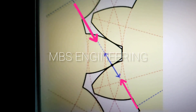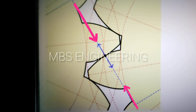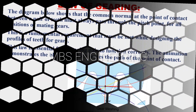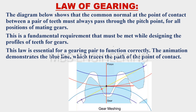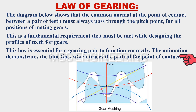Please refer to the law of gearing animation video. To achieve the law of gearing or constant angular velocity, a normal at the point of contact between mating gear teeth always passes through the pitch point. The diagram shows that the common normal at the point of contact between a pair of teeth must always pass through the pitch point for all positions of mating gears. This is a fundamental requirement that must be met while designing the profiles of teeth for gears. This law is essential for a gearing pair to function correctly. The animation demonstrates the blue line, which traces the path of the point of contact.